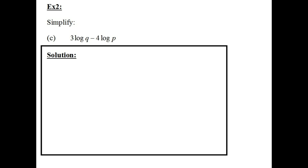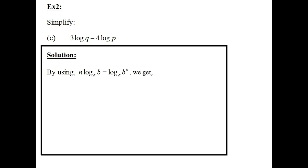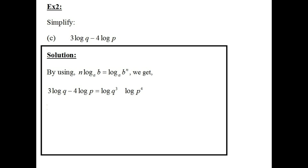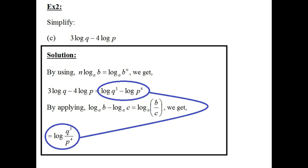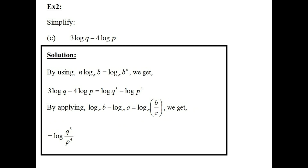Example 2c: simplify 3 log q minus 4 log p. Using the power rule, I rewrite 3 log q as log q cubed and 4 log p as log p to the power 4, giving log q cubed minus log p to the power 4. Applying log b − log c = log b/c, this becomes log of q cubed over p to the power 4. This is the simplified solution for example 2c, and that completes these examples and ends this video.